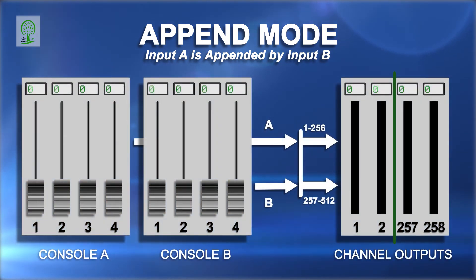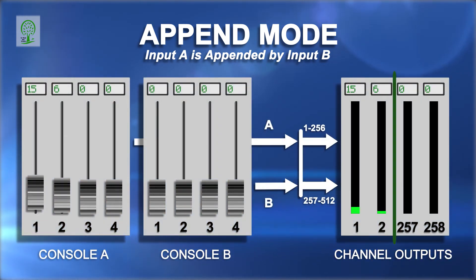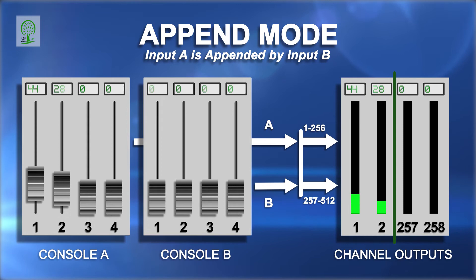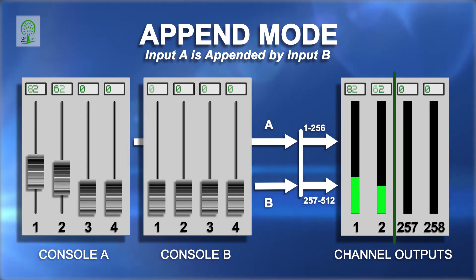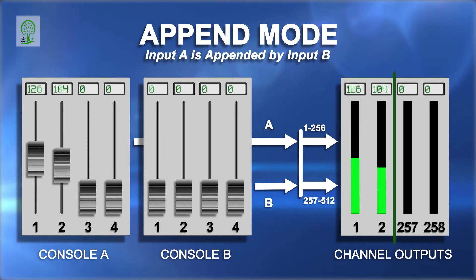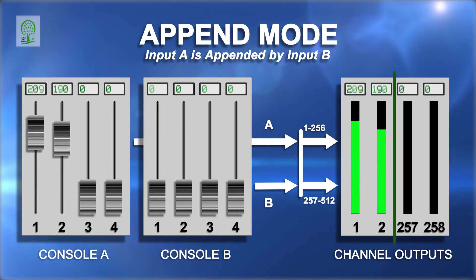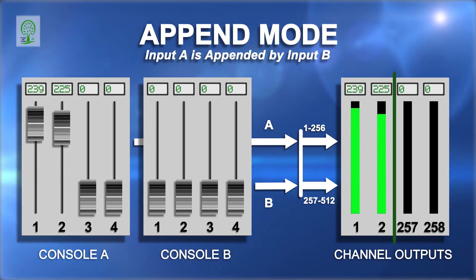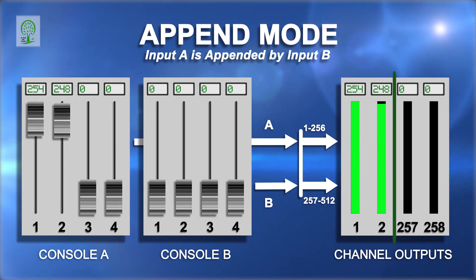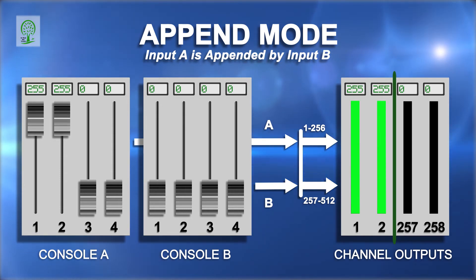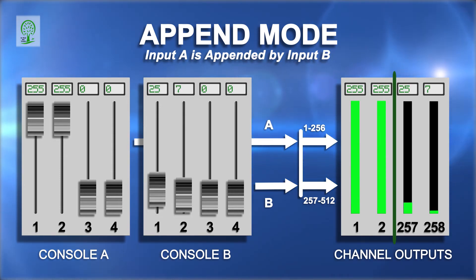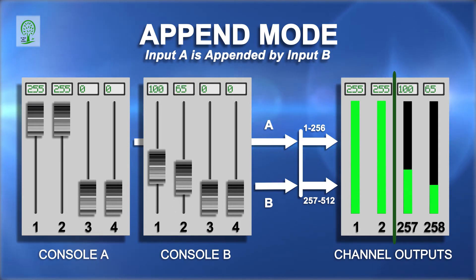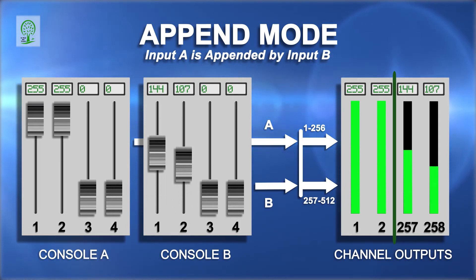For example, if the merger is set in the append mode and the append size is set to 256, then input A controls DMX channels 1 through 256, and input B controls DMX channels 257 through the remaining channels up to 512.